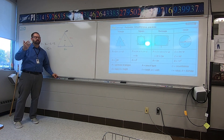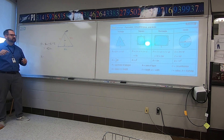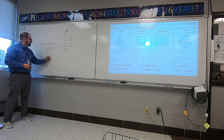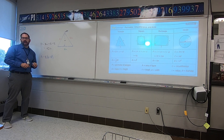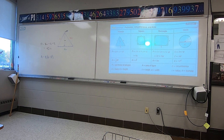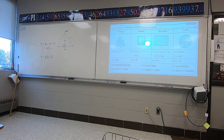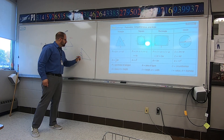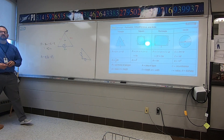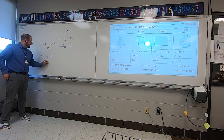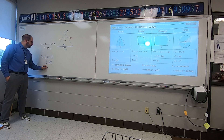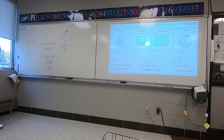Now to find area, you have to use the height and base. The base is 16, the height is 10. You multiply those two together and then cut that answer in half — that's how you find area of a triangle: base times height divided by 2. The base and height have to be at a 90-degree angle from each other — those are the two sides that touch the right angle. So 16 times 10 is 160, cut in half is 80 — that's 80 inches squared.